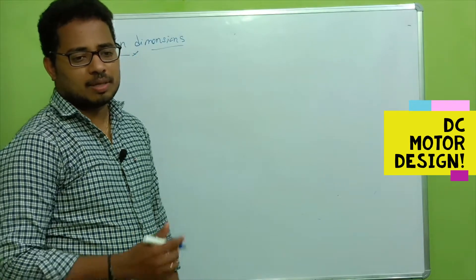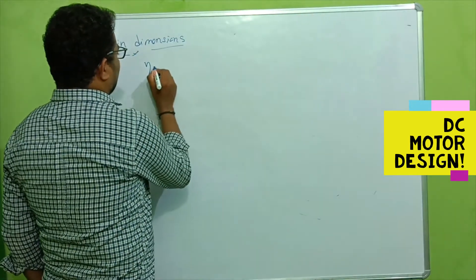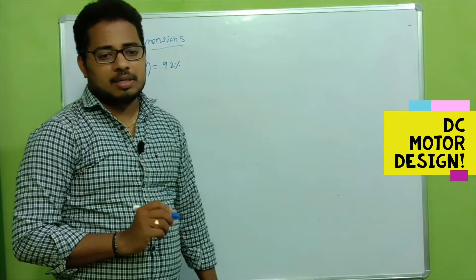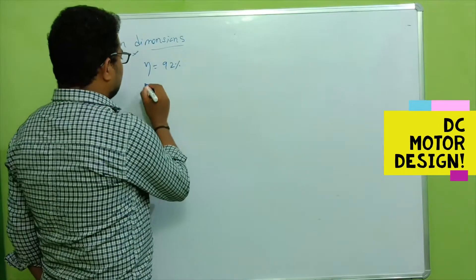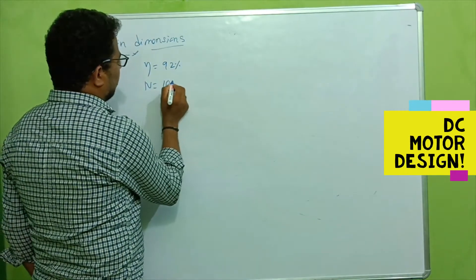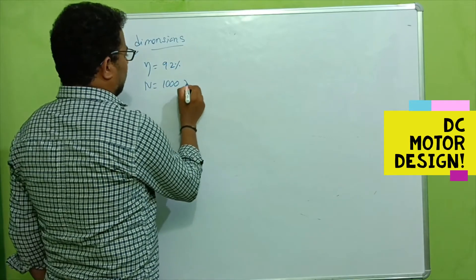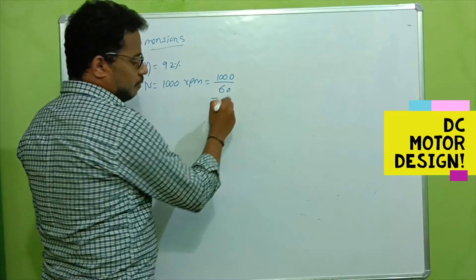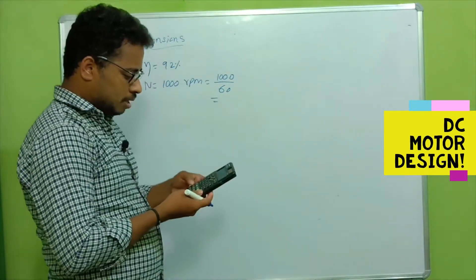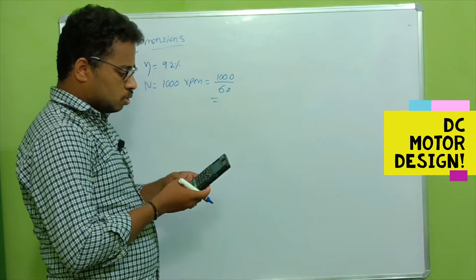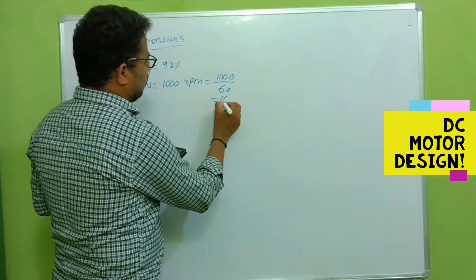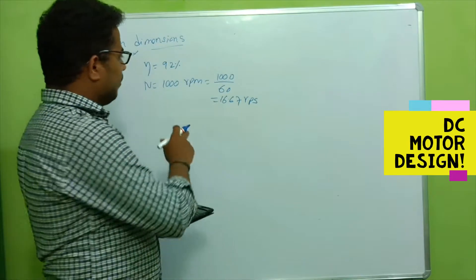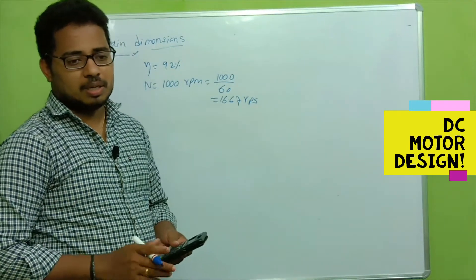For this machine, the motor efficiency is already given as 92 percent. The speed is given as 1000 RPM, but we will use RPS most of the time, so dividing by 60 gives us 16.67 RPS — rotations per second. This figure we are going to use many times.